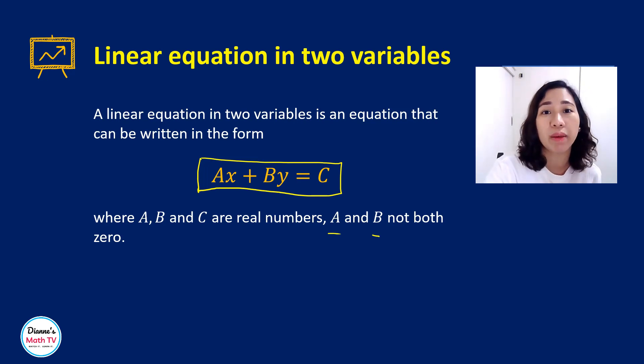It's possible that one of them is 0, but they cannot be both. So what are the things that you have to remember here to know whether it is a linear equation in two variables? Take note that what can you observe? The exponents of x and y are only 1.